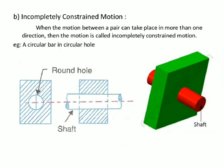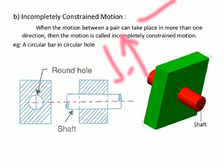Incompletely constrained motion is when the motion between a pair can take place in more than one direction. For example, a circular shaft in a circular hole can move forward and backward but can also rotate about its axis. So it has two possible motions — translational and rotational — making it incompletely constrained.